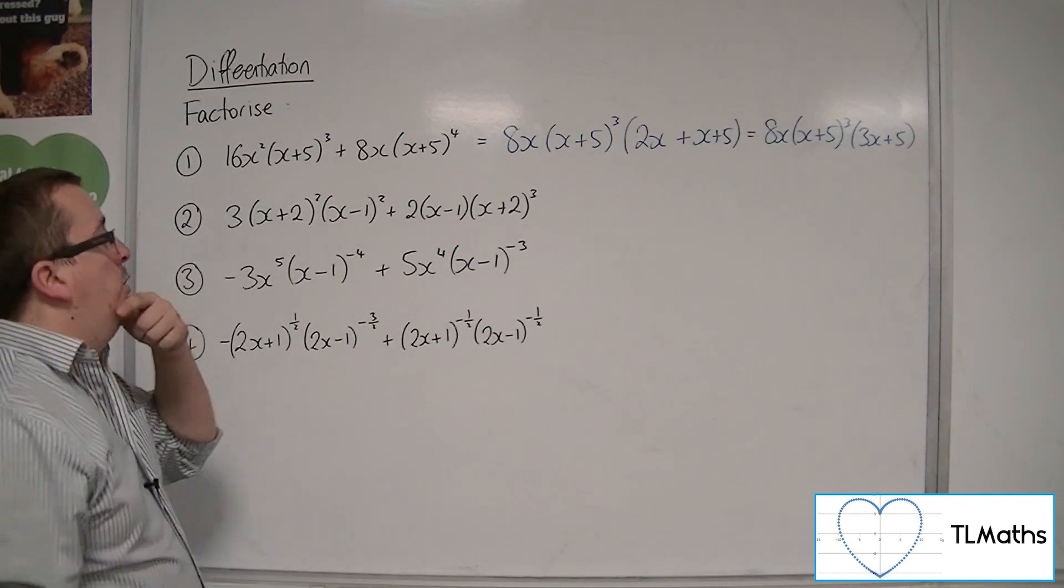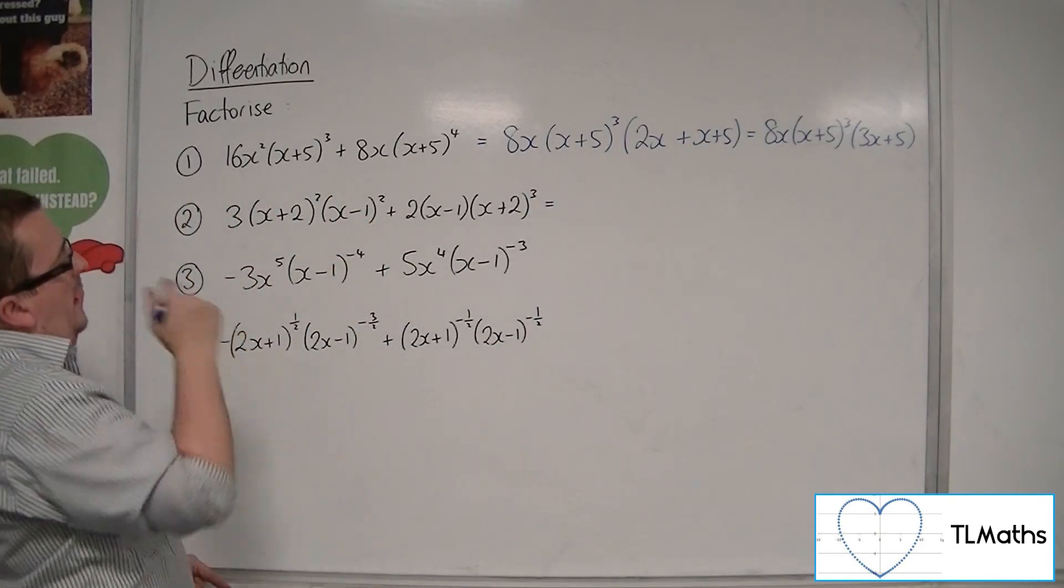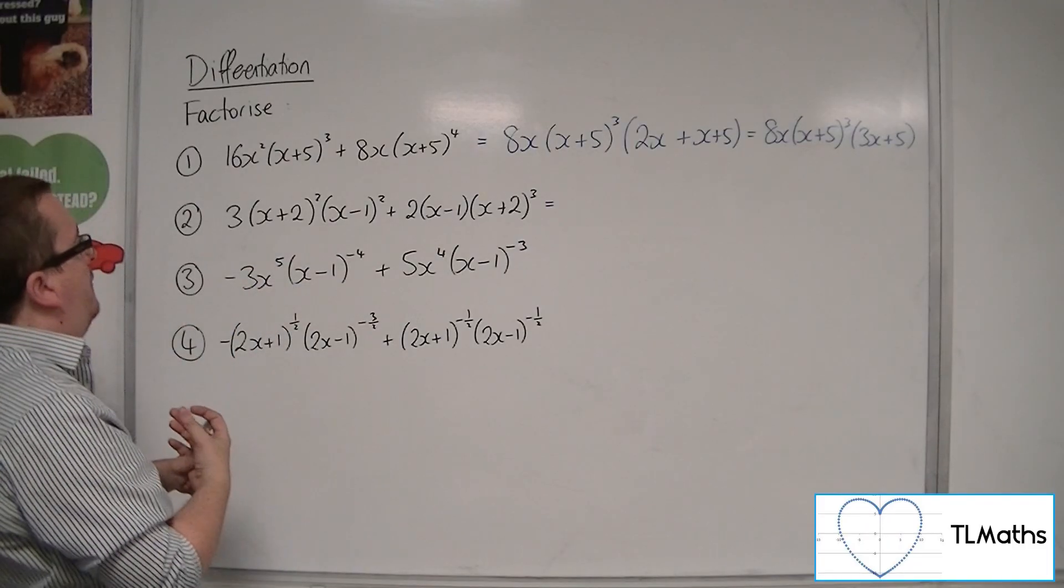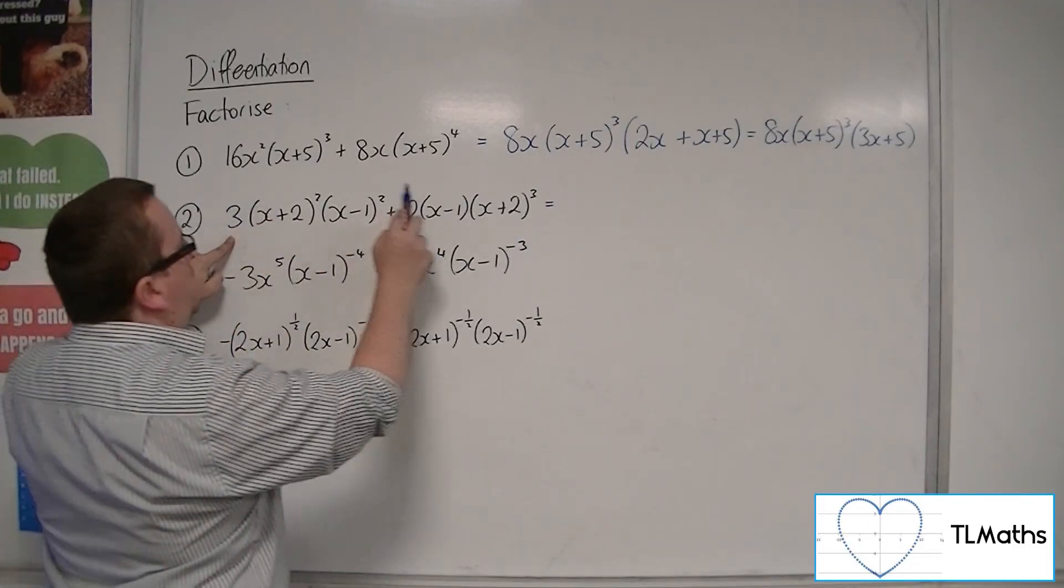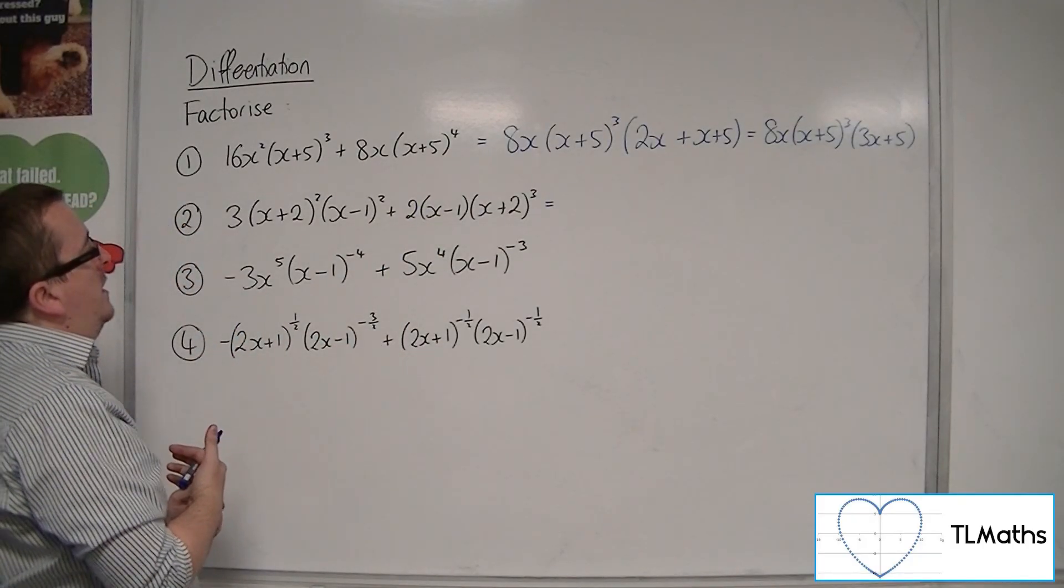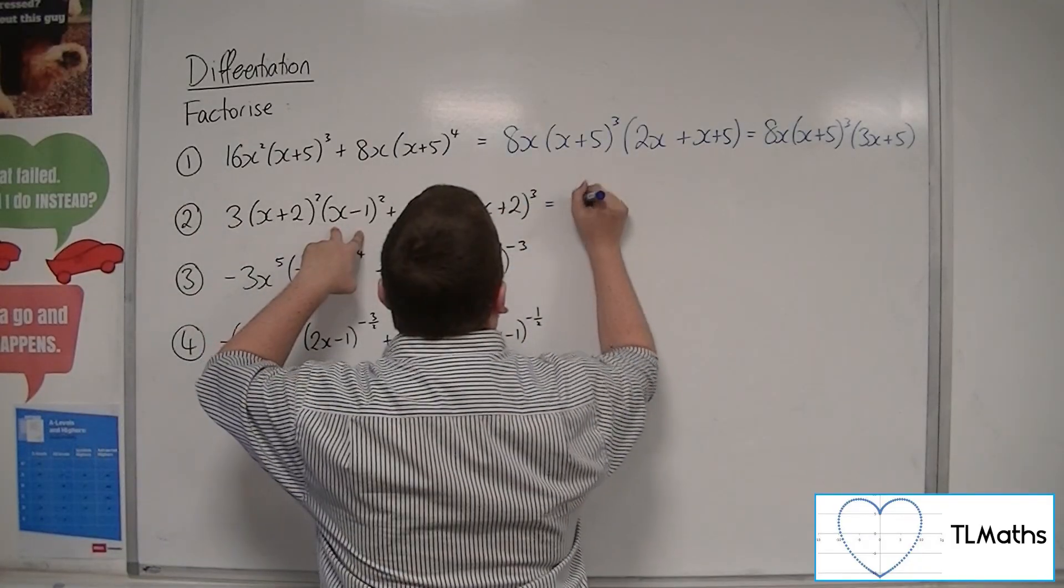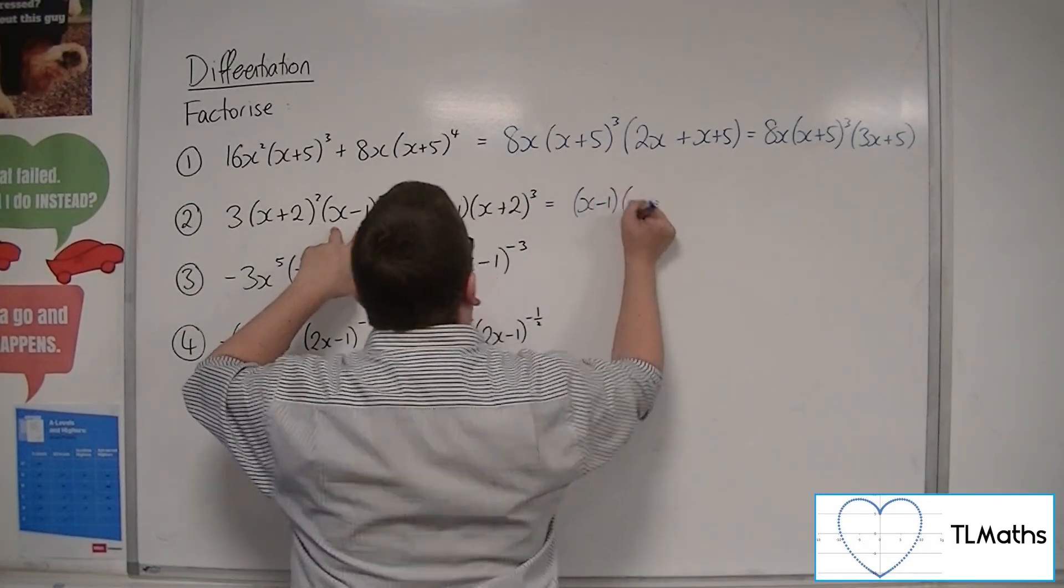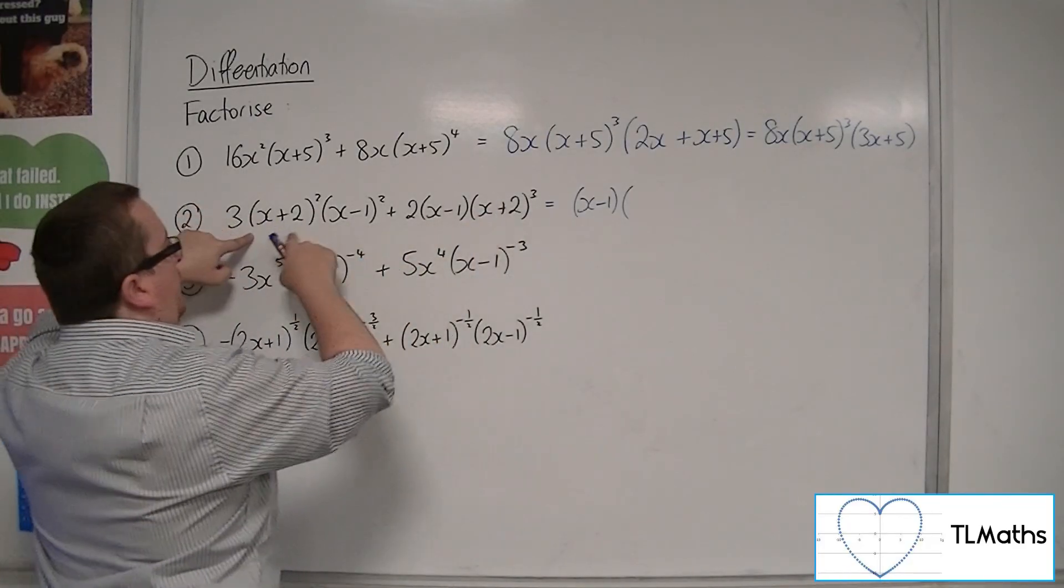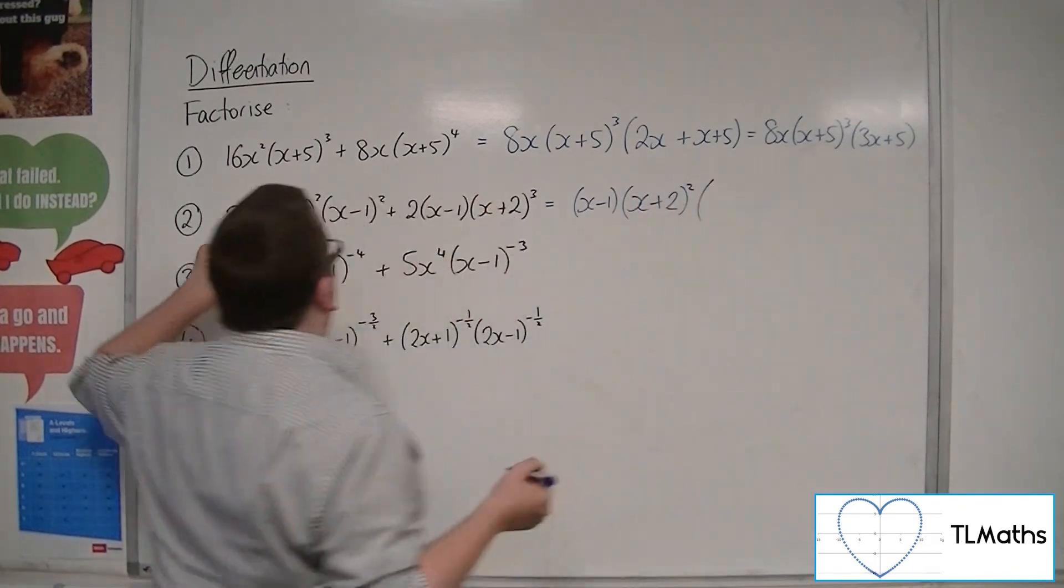So let's have a look at number 2. Now for number 2, because we've got these twin brackets, we need to be a little bit more careful. We can't factor out anything from the coefficient, so we'll have to leave that alone. We can definitely factor out (x-1) from both of those brackets, so that can come outside. And we can factor out (x+2)² from both as well.